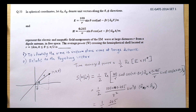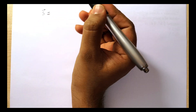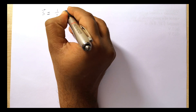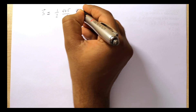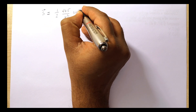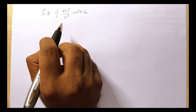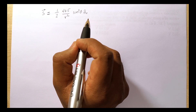We have â_θ × â_φ, and we know that â_θ × â_φ = â_r, the radial unit vector. So the Poynting vector is S = ½ × (26.5/r²) sin²θ â_r. This is our Poynting vector expression.